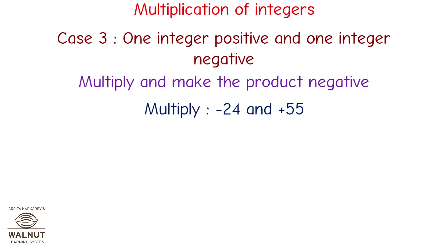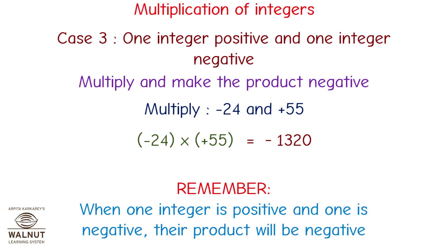Multiply minus 24 and plus 55. Minus 24 multiplied by plus 55 is equal to minus 1320. We multiply the numbers directly and get the answer. Since one number is positive and one number is negative, the product becomes negative. Remember, when one integer is positive and one is negative, their product will be negative.